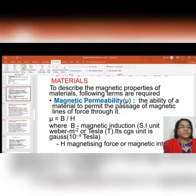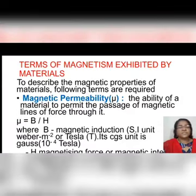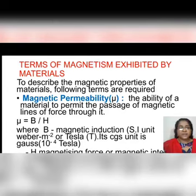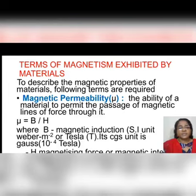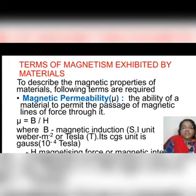Let us start with some terms associated with the magnetism exhibited by magnetic materials. The first one is magnetic permeability. The ability of a material to permit the passage of magnetic lines of force through it is known as magnetic permeability. It is denoted by mu. Mu is the ratio of magnetic induction to the magnetizing field. Magnetic induction means magnetic flux present inside the specimen; H is the external magnetic field which is magnetizing it. Their ratio is known as the magnetic permeability, denoted by mu.